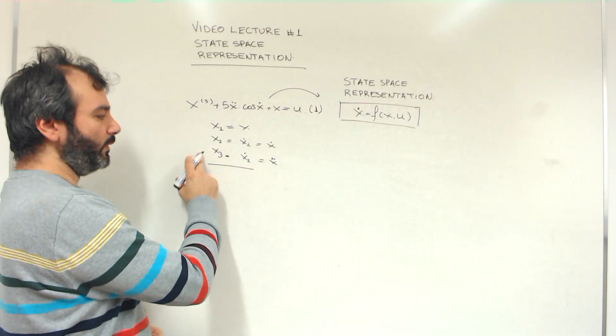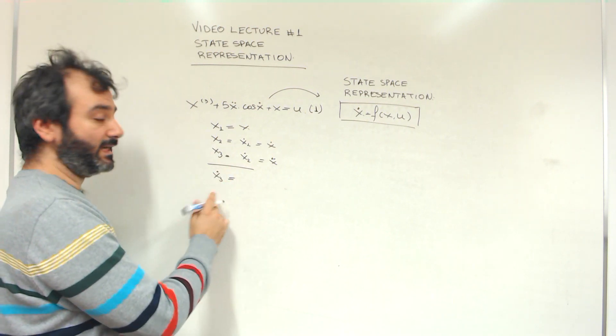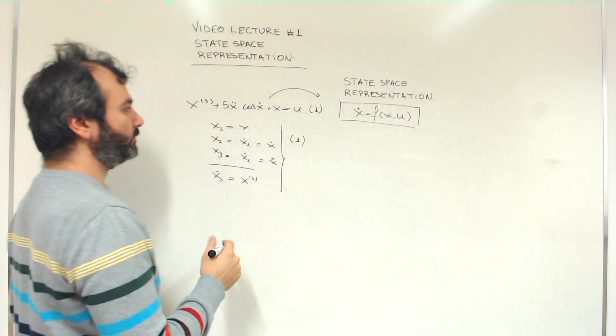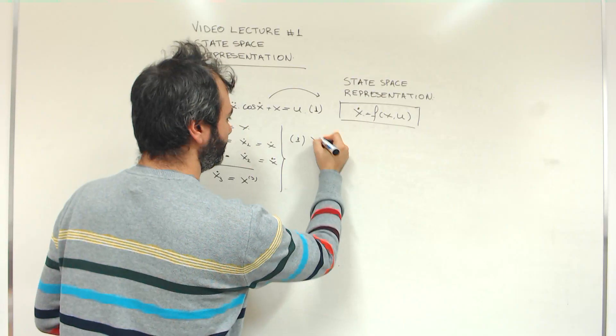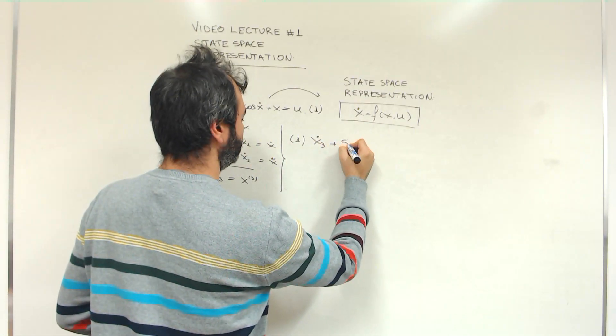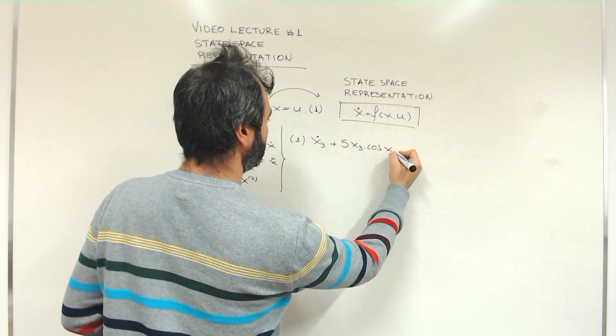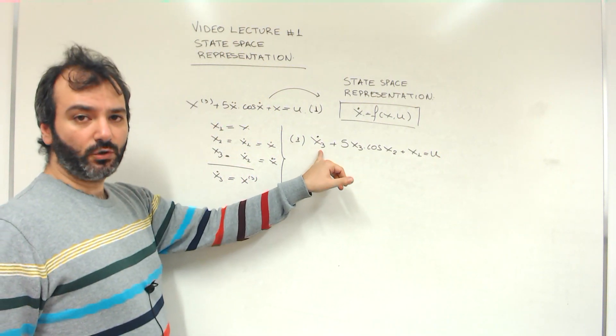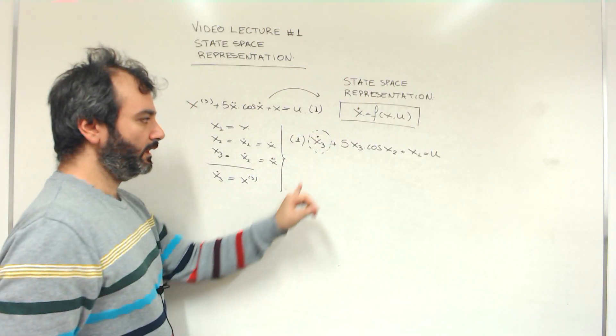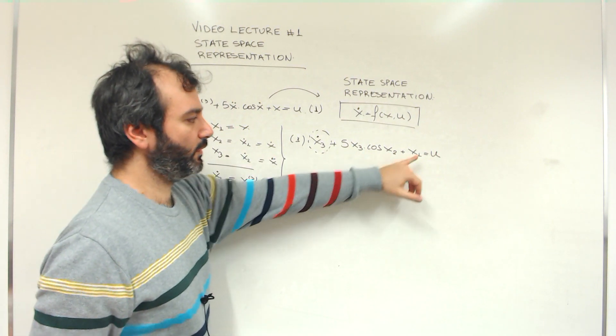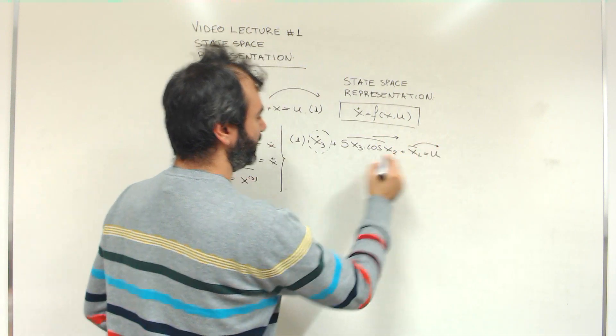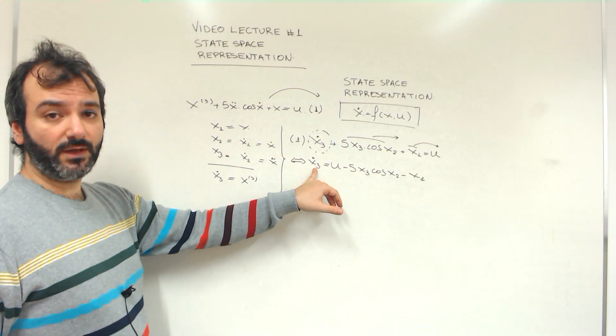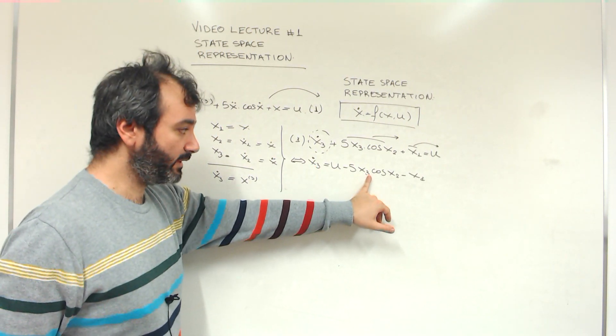If we take the derivative on both sides here, we will see that the derivative of x3 is precisely the third derivative of x. In a sense, we are done now, because we can take equation one and write it like that. Instead of the third derivative of x, we will write x3 dot, and so on. Therefore, here we have a differential equation which involves only a first order derivative, this one. Let's move all other terms on the right-hand side. This goes to the right-hand side, this goes to the right-hand side. Are we done? Well, not entirely.